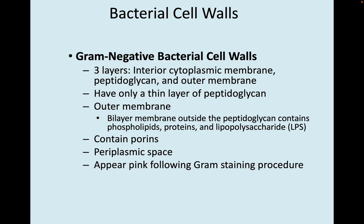The second type of bacterial cell wall is gram-negative. These have three layers: an interior cytoplasmic membrane, a peptidoglycan layer — except the peptidoglycan layer in gram-negative bacteria is very thin — and an outer membrane. The outer membrane is a bilayer outside the peptidoglycan containing phospholipids, proteins, lipopolysaccharides, and porins. The space around that thin layer of peptidoglycan between the two membranes is called the periplasmic space. Gram-negative bacteria appear pink following a gram stain, compared to gram-positives that look purple.